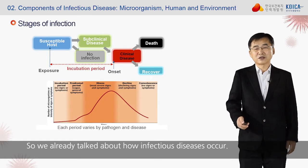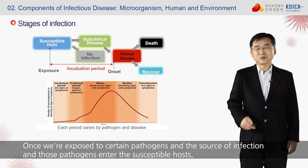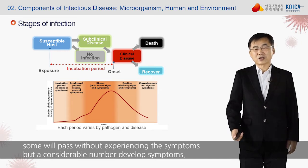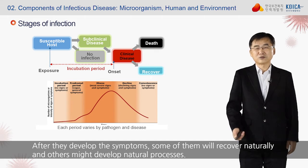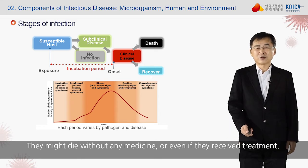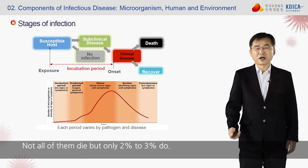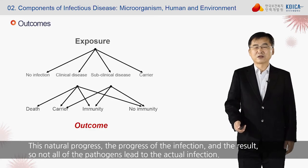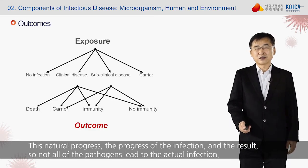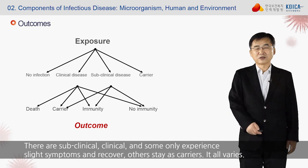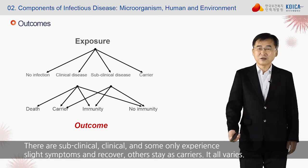Once we're exposed to certain pathogens and the source of infection enters susceptible hosts, some will pass without experiencing symptoms, but a considerable number will develop symptoms. After developing symptoms, some recover naturally and others might not. They might die without any medicine, or even with treatment — as we see in COVID-19. Not all of them die, only about 2% to 3%. Some remain subclinical, some clinical, some stay as carriers — it all varies.